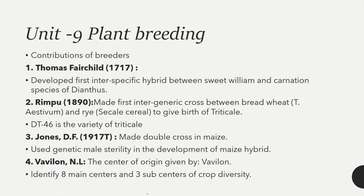The next unit is plant breeding. Thomas Fairchild developed the first interspecific hybrid between sweet william and carnation species of Dianthus. The second scientist is Rimpau, who made the first intergeneric cross between bread wheat and rye to give birth to triticale. The variety DT46 is a variety of triticale.